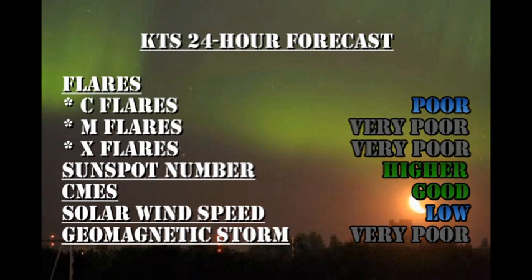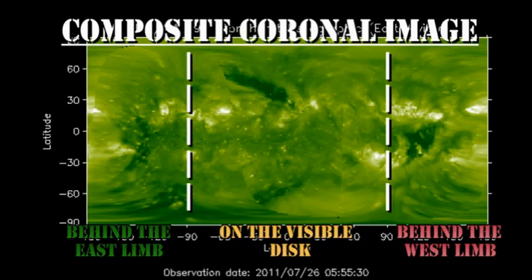As you can see from the background image here, we've had some nice aurora which are featured on spaceweather.com. In the longer term there are still a couple of regions to come over the east limb, one in the north and one in the south, but apart from that there isn't much to be expected for the next 2 or 3 days.